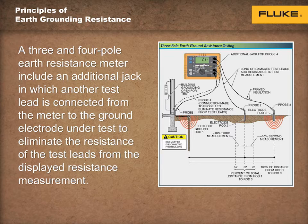Although 25 ohms may be a minimum specified value for a rod, pipe, or plate electrode, a grounding system should have a resistance of 5 ohms or less. In addition, some applications, such as with telecommunications equipment, require that the grounding system meet a 5 ohm or less minimum specification.